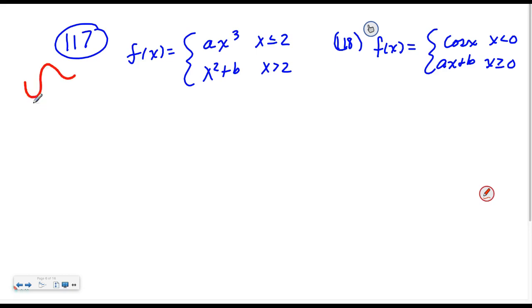And again, it's at a specific spot. In this case, we want differentiability at 2. So that means at 2, the function must be continuous.